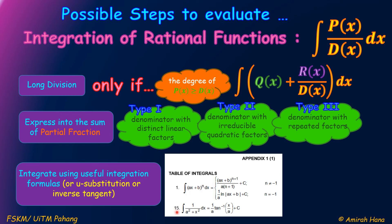Formula number 1 and formula number 15 will help you integrate the rational function using partial fractions. Formula number 1 is the integration of (Ax + B) to the power of N, dx. When N is not equal to negative 1, we use this formula — it is suitable for type 3, which is the denominator with repeated factors. When N equals negative 1, we use the formula: 1 over A times ln|Ax + B| + C. This formula is suitable for type 1, which is the denominator with distinct linear factors.